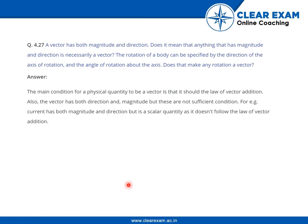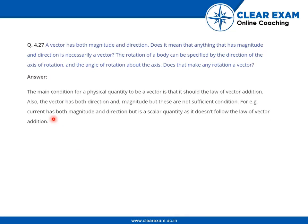The main condition for a physical quantity to be a vector is that it should abide by the law of vector addition. A vector has both direction and magnitude, but these are not sufficient conditions. For example, current has both magnitude and direction but it is a scalar quantity, as it does not follow the law of vector addition.